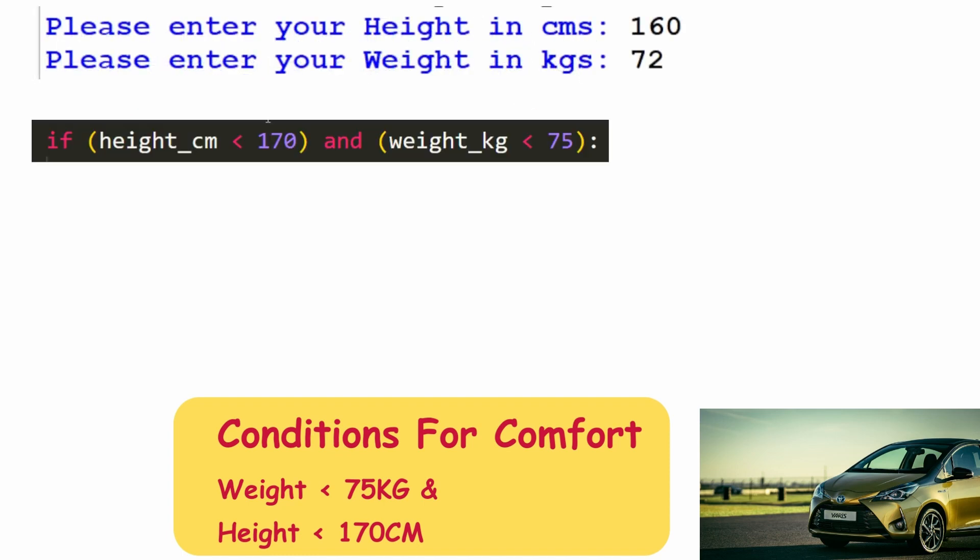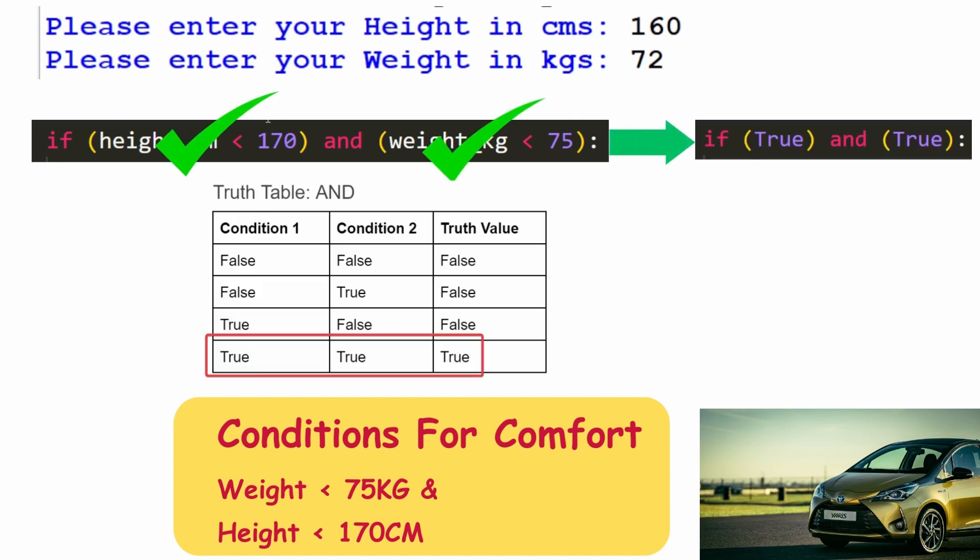Hence this entire condition gets evaluated into a single false and that's the reason in the first case the else statement got executed. In the second case both these conditions evaluated into true and the truth table tells us that true and true is true, and hence the if statement got executed in this case.